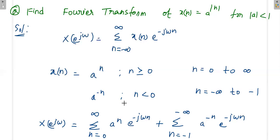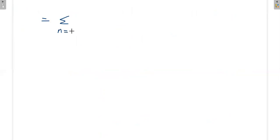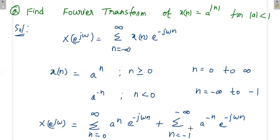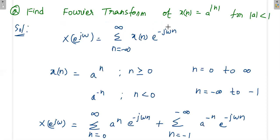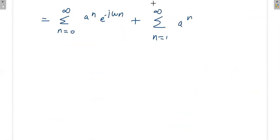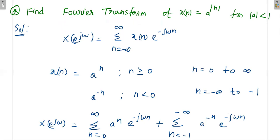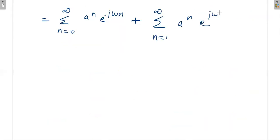The first summation series is straightforward since the variable is positive. For the second part — the negative-n region — we substitute −n for n everywhere. So the summation for n going from 1 to ∞ gives a^n · e^(+jωn), because both the −n exponents become positive.